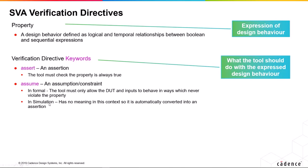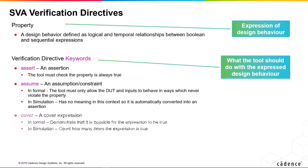In simulation, because assumption has no meaning in that context, the simulator will turn it into an assertion and prove the property is true. This is because all formal results depend upon the assumption being correct — if the assumption is not correct, the formal results are invalid. So simulation is one way in which we can validate them.